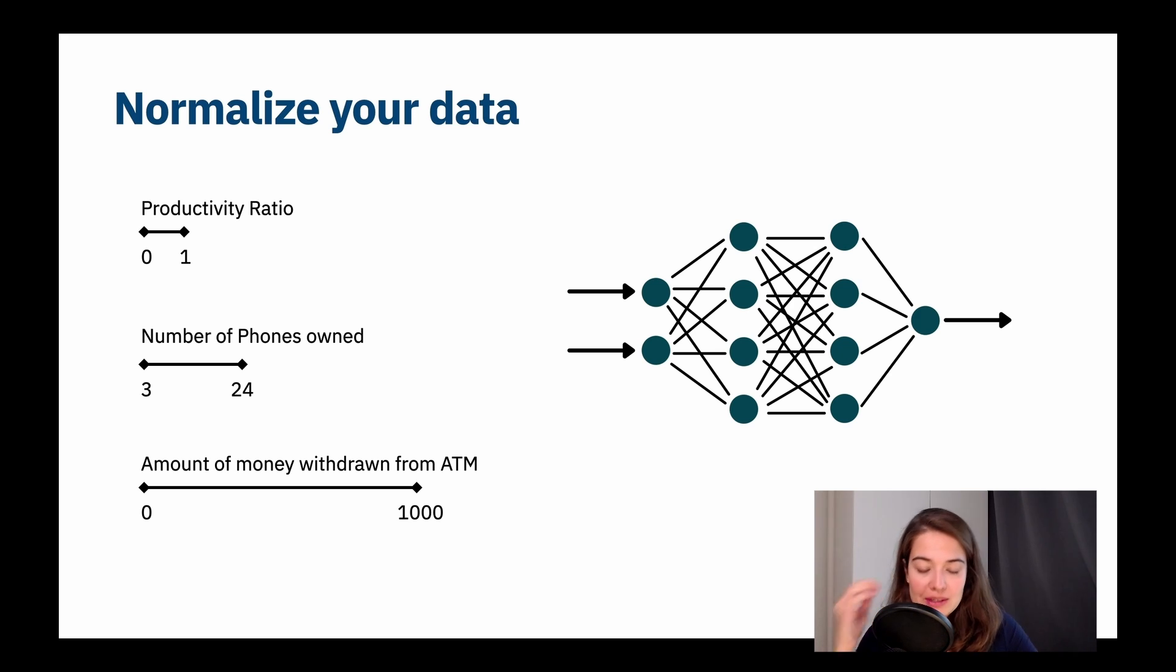So why that happens is, let's look at some example features that we can have in a set of data. So we might have a productivity ratio, it could be like a rate that your manager gave you. We can have number of phones ever owned, that could be ranging from like three to 24, for example. We can have amount of money withdrawn from an ATM today, and that might be from zero to 1000, because probably 1000 more or less is like a limit of how much money people can withdraw.